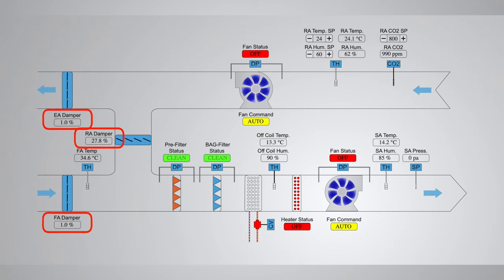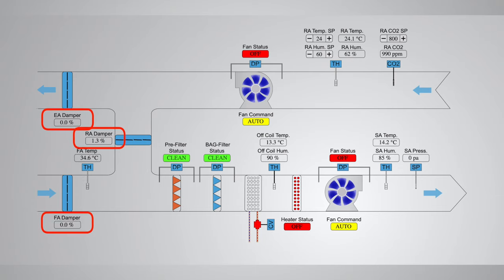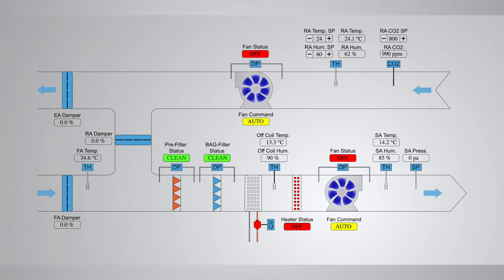The control loops — temperature control, humidity control, and CO2 control — are the most widely used control loops in an AHU. It is very important for a control engineer to verify these control loops during commissioning. In our next video, we will learn about the static pressure control loop, which will control the fan speed using VFDs.